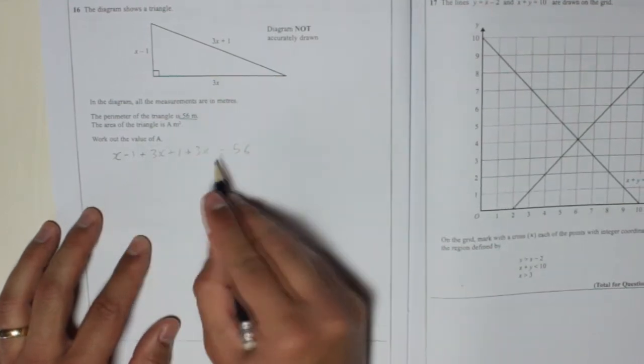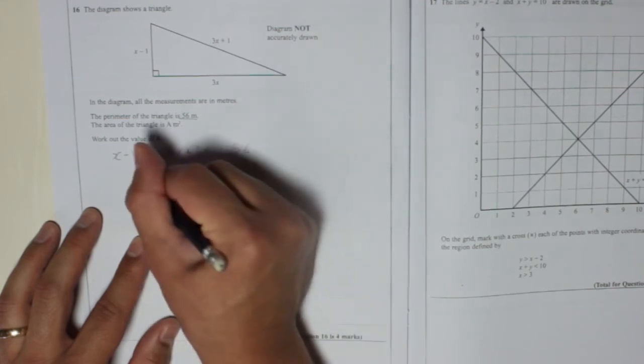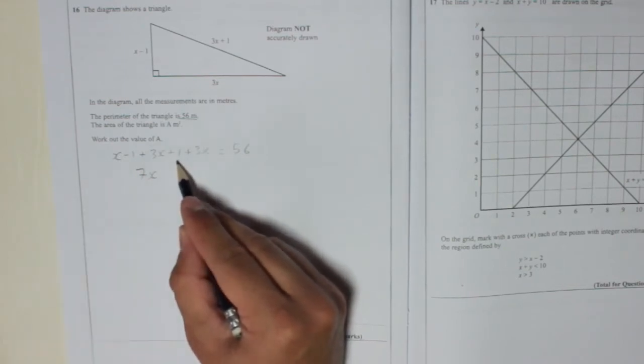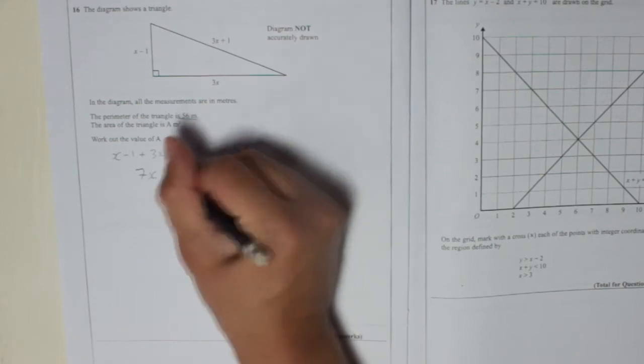I'll tidy this up so I'll gather the like terms. So we've got an x, a 3x and a 3x. That's 7x. We've got a minus 1 and a plus 1. So that cancels each other to 0. And then 7x equals 56.